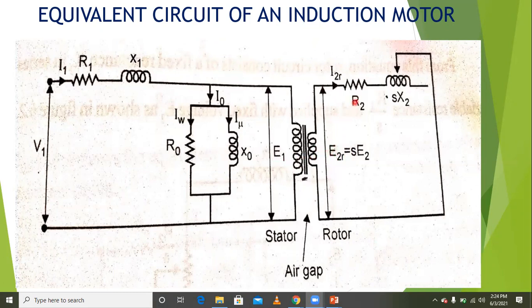In the rotor equivalent circuit, the rotor winding resistance is R2 and the leakage reactance in the rotor at standstill is X2. At slip s, the leakage reactance becomes sX2, changing with respect to load and also with slip.